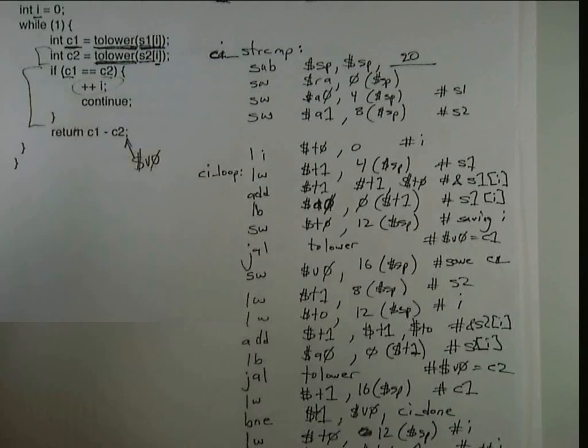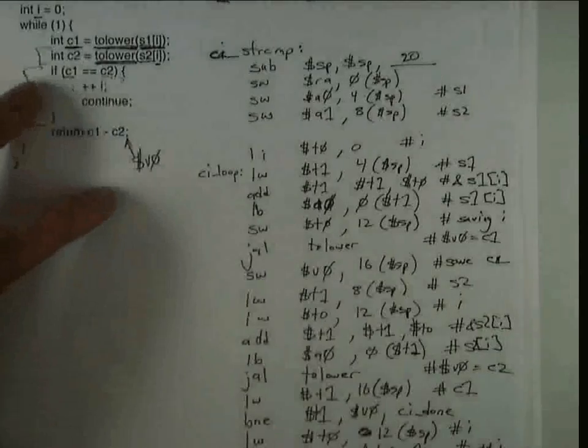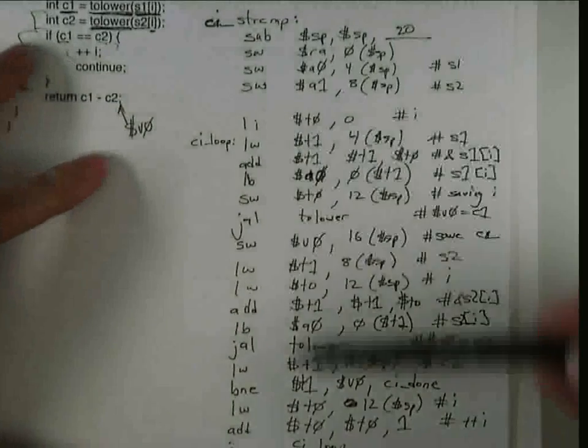In the first half of this, I demonstrated how to write the case-insensitive string compare using caller saved registers. What's characteristic of that solution is that in the body of this loop, we need to be saving and restoring registers around a call.